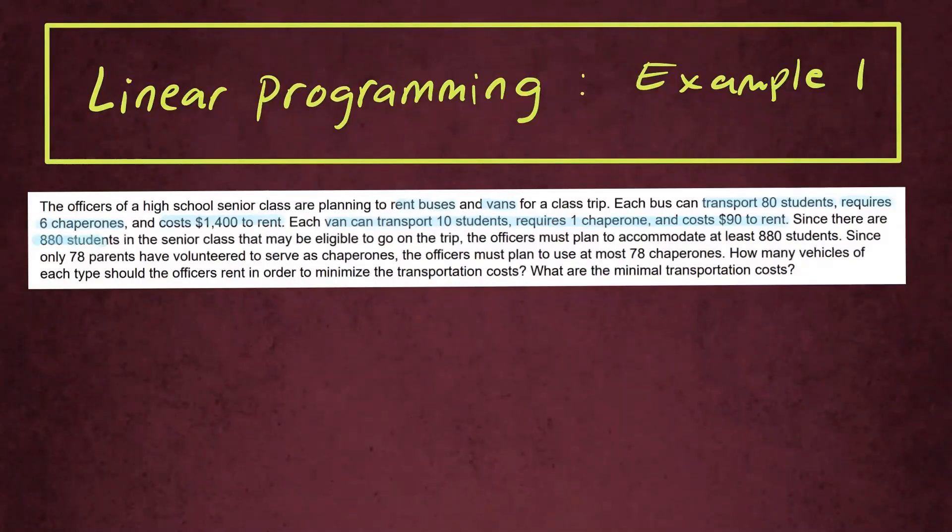Since there are 880 students in the senior class that may be eligible to go on the trip, the officers must plan to accommodate at least 880 students. Since only 78 parents have volunteered to serve as chaperones, the officers must plan to use at most 78 chaperones. How many vehicles of each type should the officers rent in order to minimize the transportation cost? And what are the minimal transportation costs?